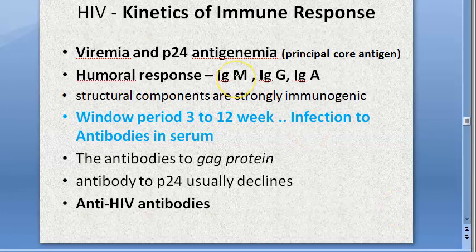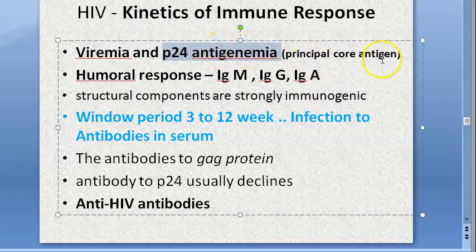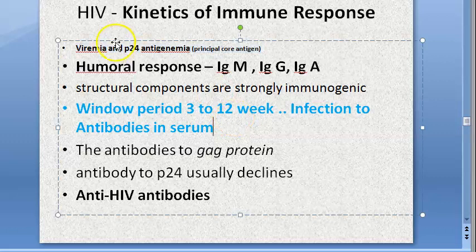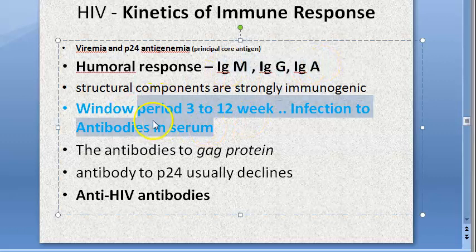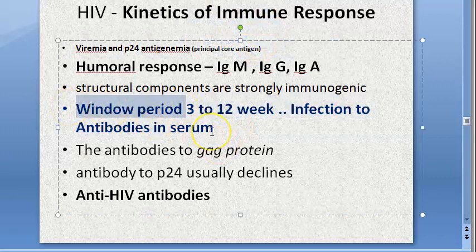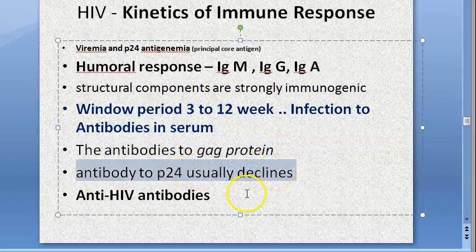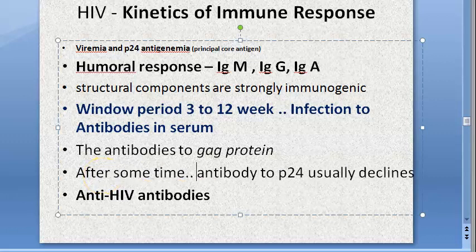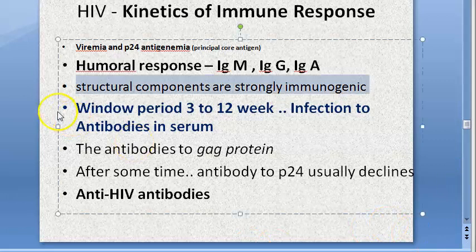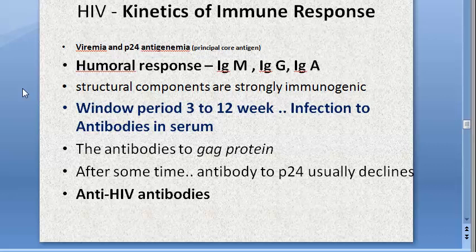There will be viremia and p24 antigenemia. The body produces antibodies like IgM, IgG, and IgA. The window period is from the time the person gets infected until antibodies appear in serum — around 3 to 12 weeks. The body makes antibodies to the gag protein and p24, but the antibody to p24 declines after some time. The problem is the virus is destroying our T lymphocytes, which reduces the person's immunity and leads to many opportunistic infections.